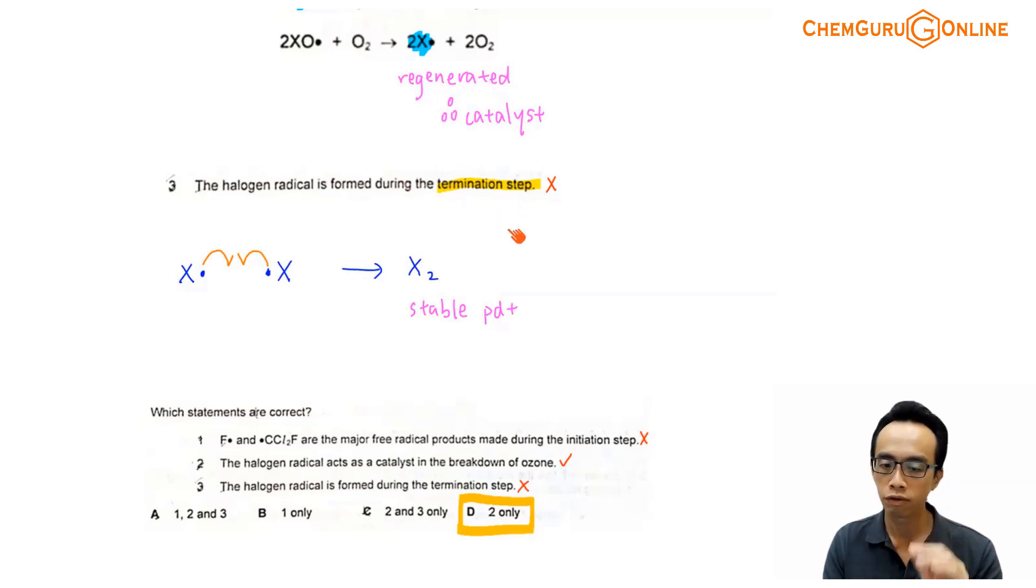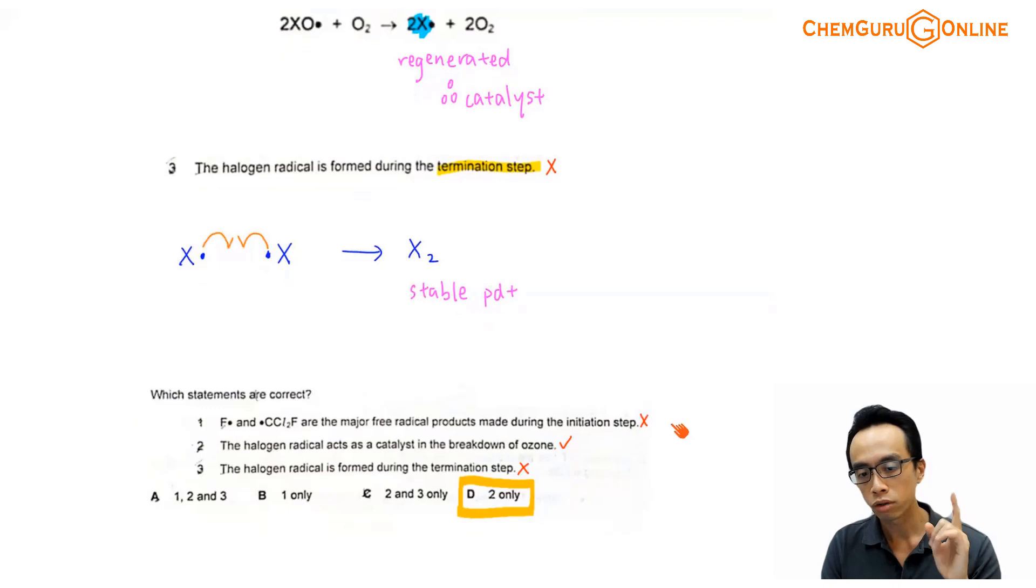All right, so now we have gone through each of the statements. We know that statement number one is not true. Statement number two is true. Statement number three is not true. So once we have this, we can run through our options A, B, C, D. My answer will be D.